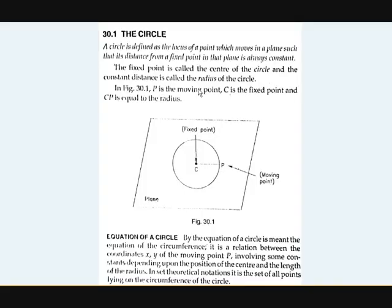Let's start with the definition. In the previous video, while defining locus, we took an example of a circle. A circle is defined as the locus of a point which moves in a plane such that its distance from a fixed point — as you can see here, C is the fixed point in that plane — is always constant. The distance CP is always constant, and that is called the radius.